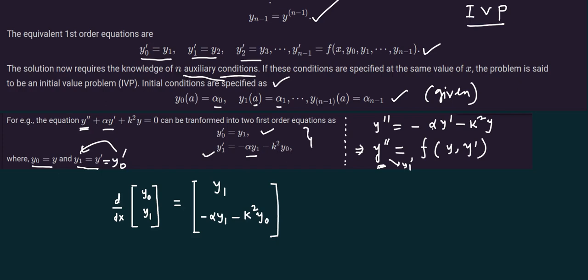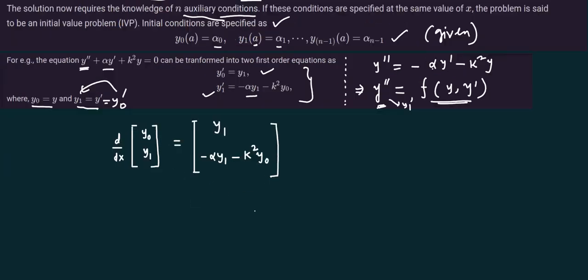These are two coupled first order equations, and first order equations are easy to implement using ODEINT or any other first order problem programs. This function f is known and there are initial conditions. The basic idea of transforming is described here, and it can be put into matrix form: d/dx of [y0, y1] equals the right hand side.